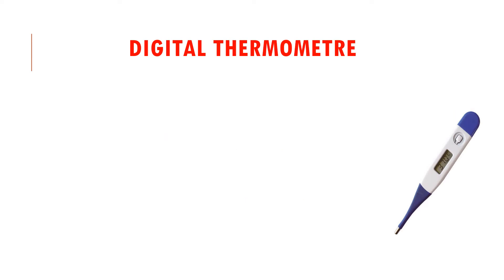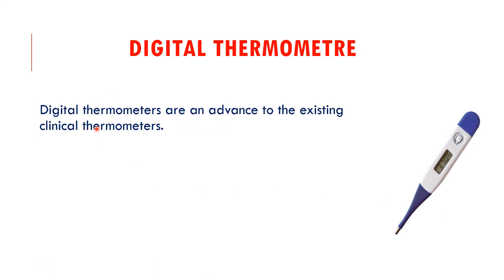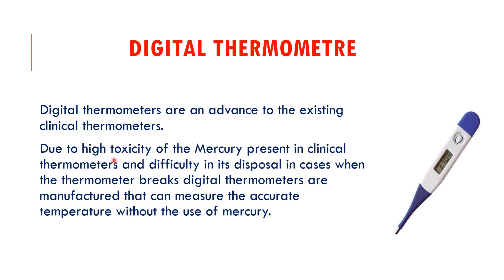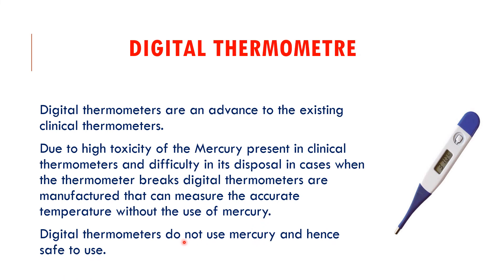Digital thermometers are an advancement over clinical thermometers. Due to the high toxicity of mercury and difficulty in its disposal when the thermometer breaks, digital thermometers are manufactured to measure accurate temperature without mercury. There is a temperature sensor that helps us know the exact body temperature, and anyone — even a child — can easily read it. Digital thermometers do not use mercury, hence they are safer to use.